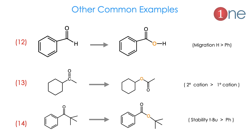Example 12: a benzoyl compound — oxidation happens on the hydrogen side because hydrogen has very high migratory aptitude. The final product is benzoic acid. Example 13: a ketone with methyl on one side and cyclohexane on the other. Cyclohexane has a tertiary carbon, so migration happens via the tertiary carbon, and oxygen is inserted between the ketone and the cyclohexane group.